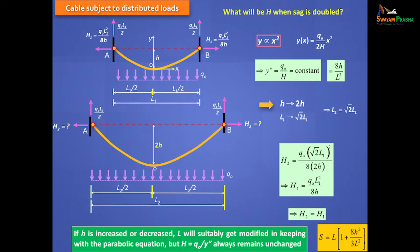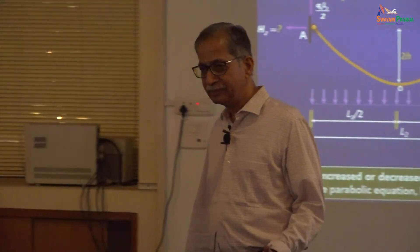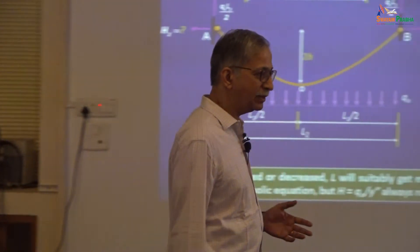The total load will be shared equally in the vertical direction. So if the distributed load is Q₀ and the length is L1, each of the two vertical reactions will be Q₀ into L1 by 2. How do we get the horizontal reaction in a cable? In general, by invoking another equation.